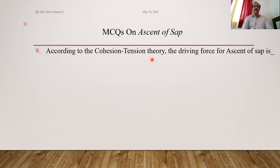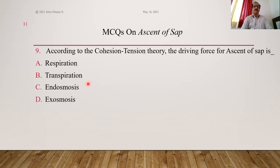Question 9: According to the cohesion tension theory, the driving force of ascent of sap — is it respiration, transpiration, endosmosis, or exosmosis? The driving force responsible for ascent of sap as per the cohesion tension theory, also called transpiration pull theory, is transpiration. Option B is the answer.